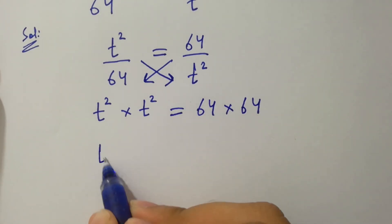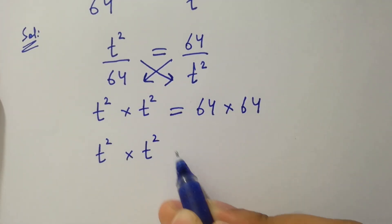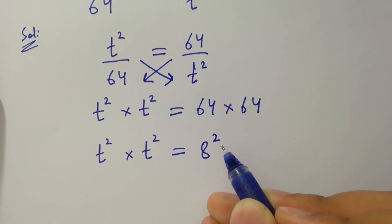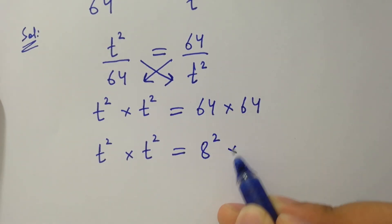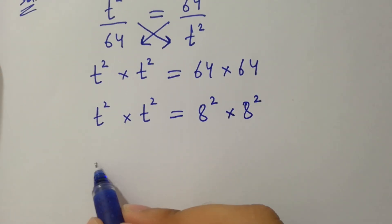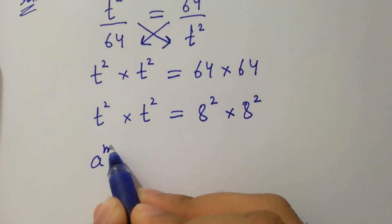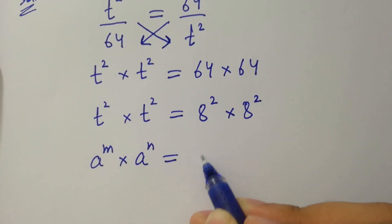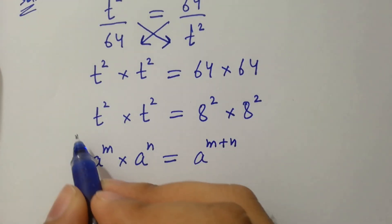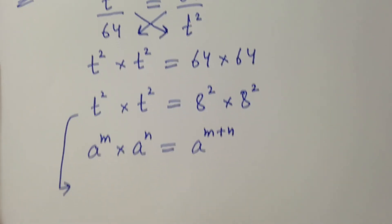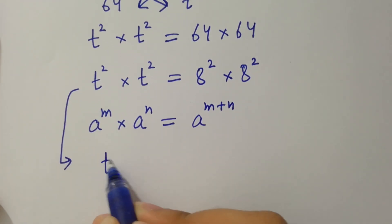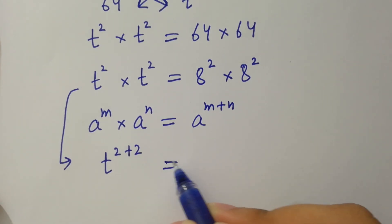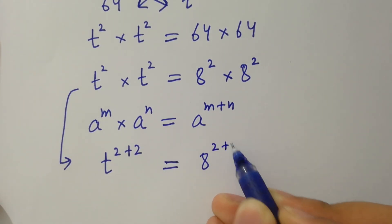t squared times t squared. Since a to the power m times a to the power n equals a to the power m plus n, then it will be t to the power 2 plus 2 equal to 8 to the power 2 plus 2.